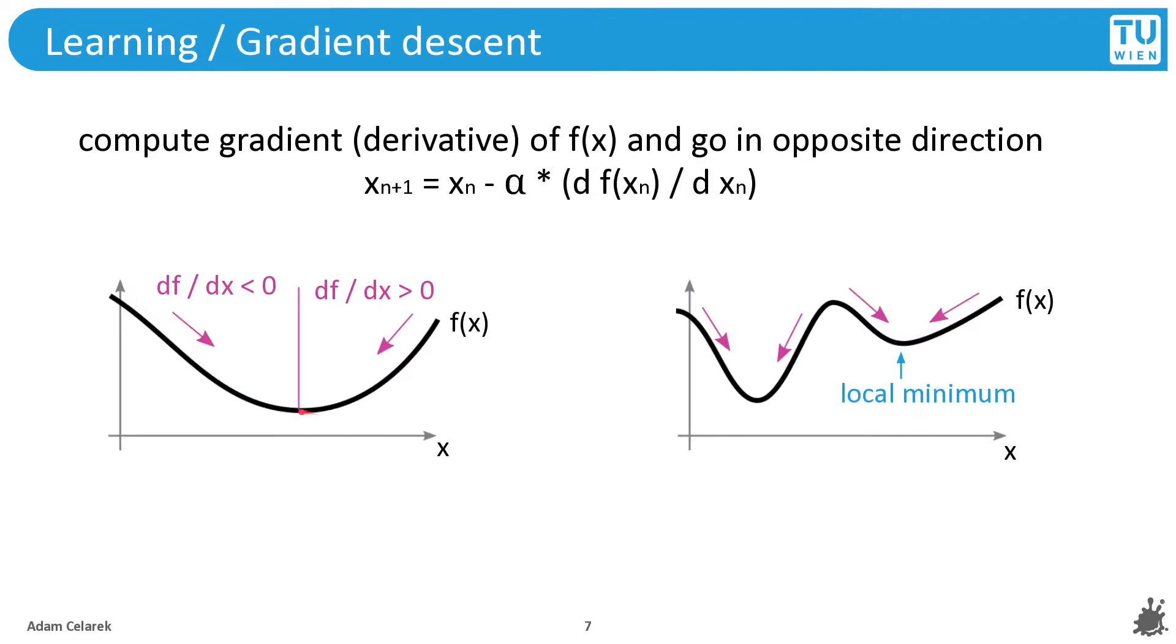Basically, we try to find the minimum of a function. Here this f represents my cost function. If we are on the left side, we look at the gradient, so we look at the derivative and we go to the right, or if we are here we would go to the left. One drawback of this is that if you use this method, you will only find a local minimum or you might not find the global minimum, depending on the shape of this function. This is a typical problem for machine learning.